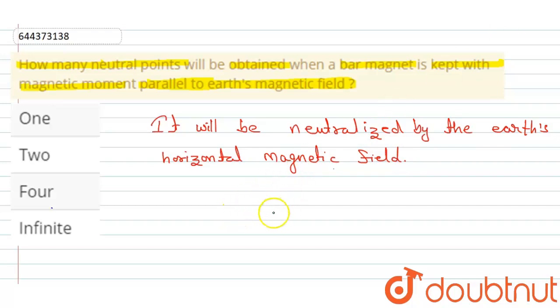Because the magnetic field around a bar magnet like this, here is the direction of magnetic field in this, and it is equal and opposite to the BH, means the horizontal magnetic field of earth.